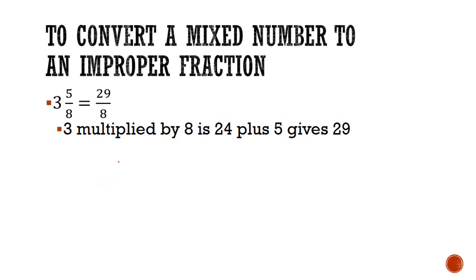What we are told to do is multiply the whole number by the denominator. 3 and 5 eighths is equal to 3 multiplied by 8 which is equal to 24 plus 5 over 8. 24 plus 5 is equal to 29 over 8.